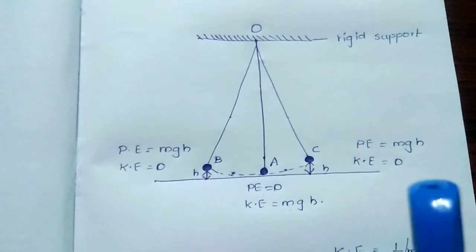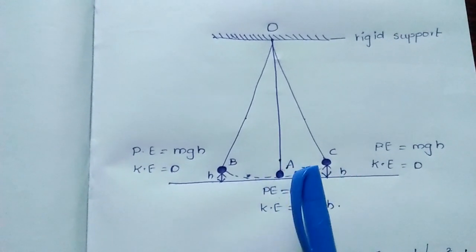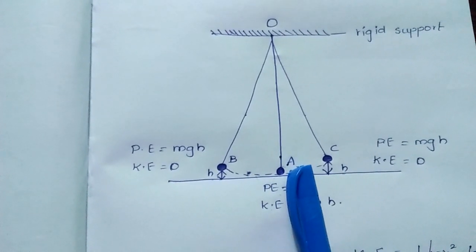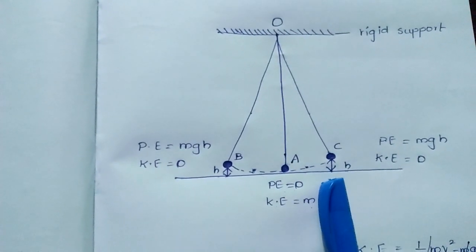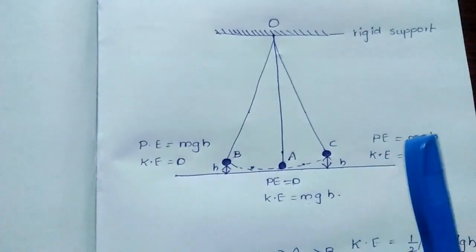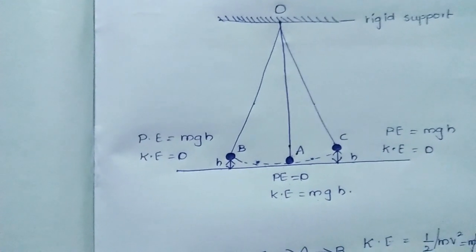Now, without taking the force of friction between the bob and the surrounding air into consideration, we are going to learn about this phenomenon. A strictly noted point is the force of friction is not taken into consideration.